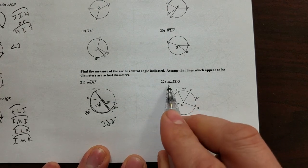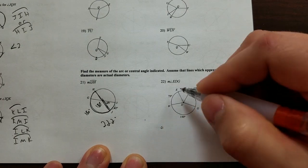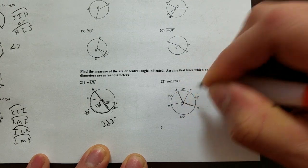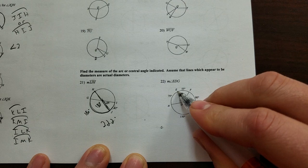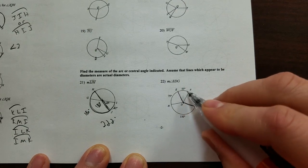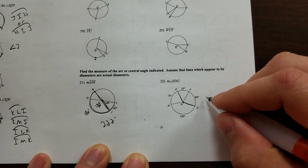So this asks for the central angle, angle EDG. E, D, G. Well that will just be the same as the sum of the arc E, G. So 55 plus 80, 135 degrees.